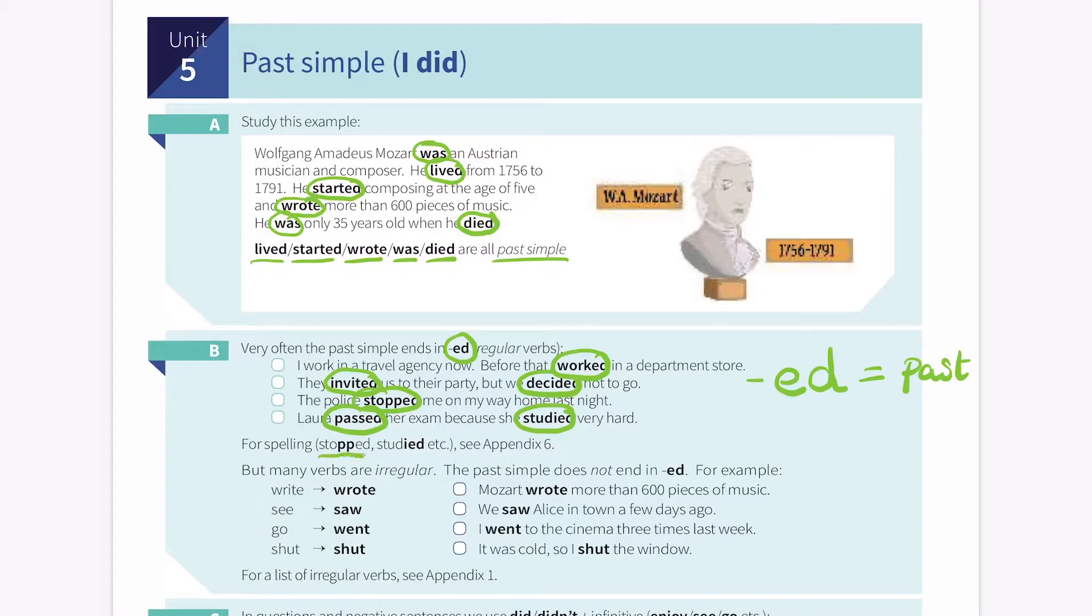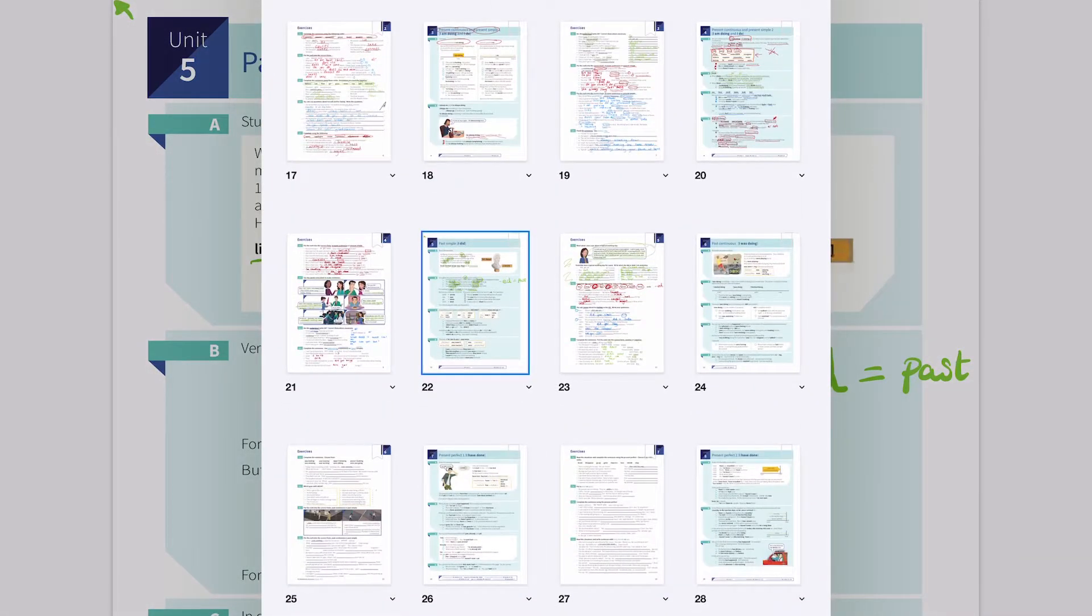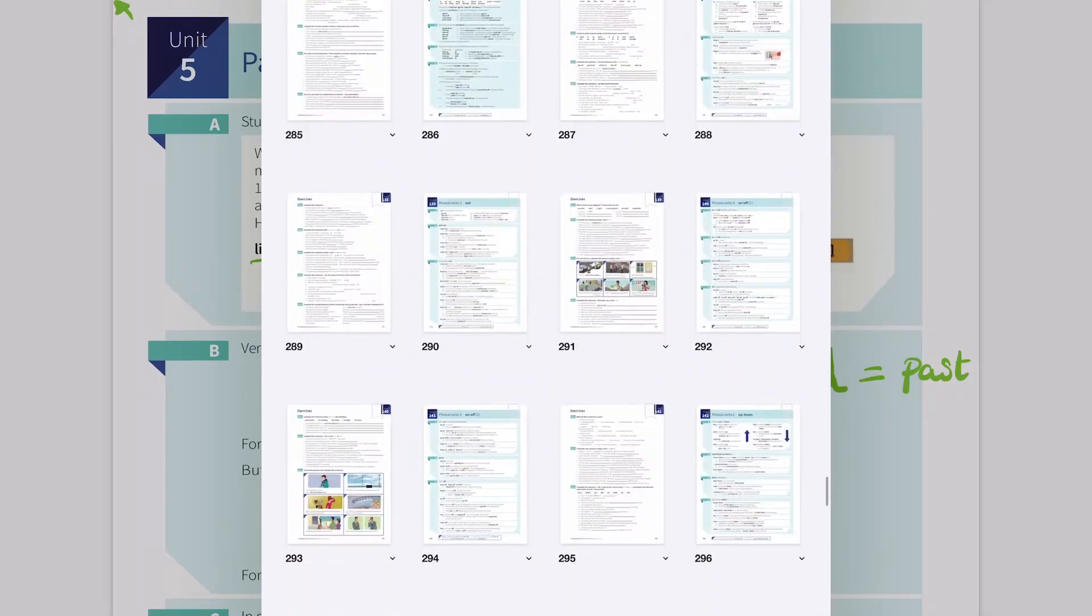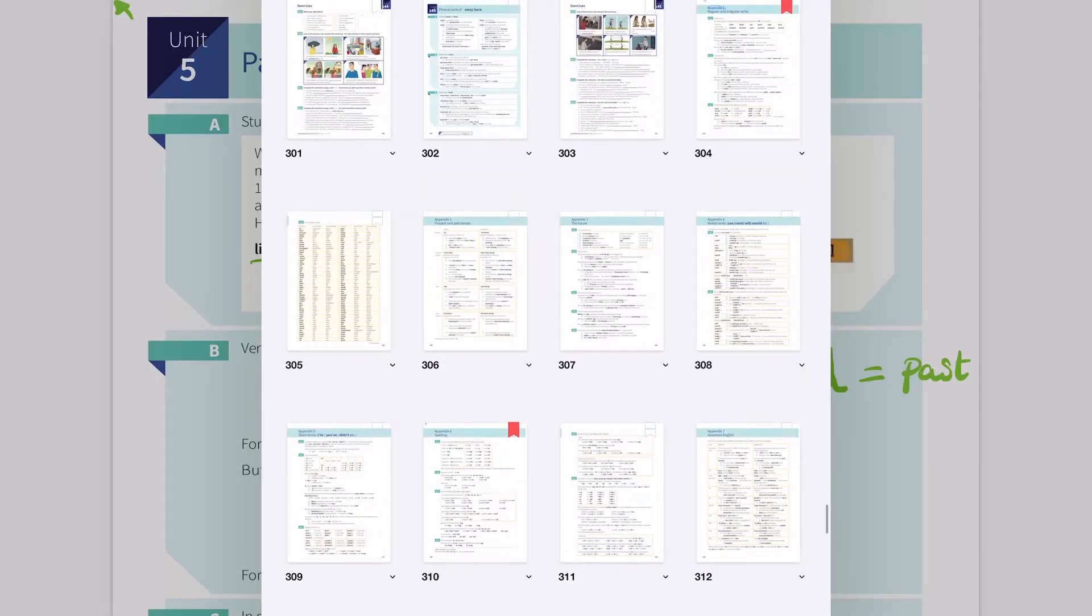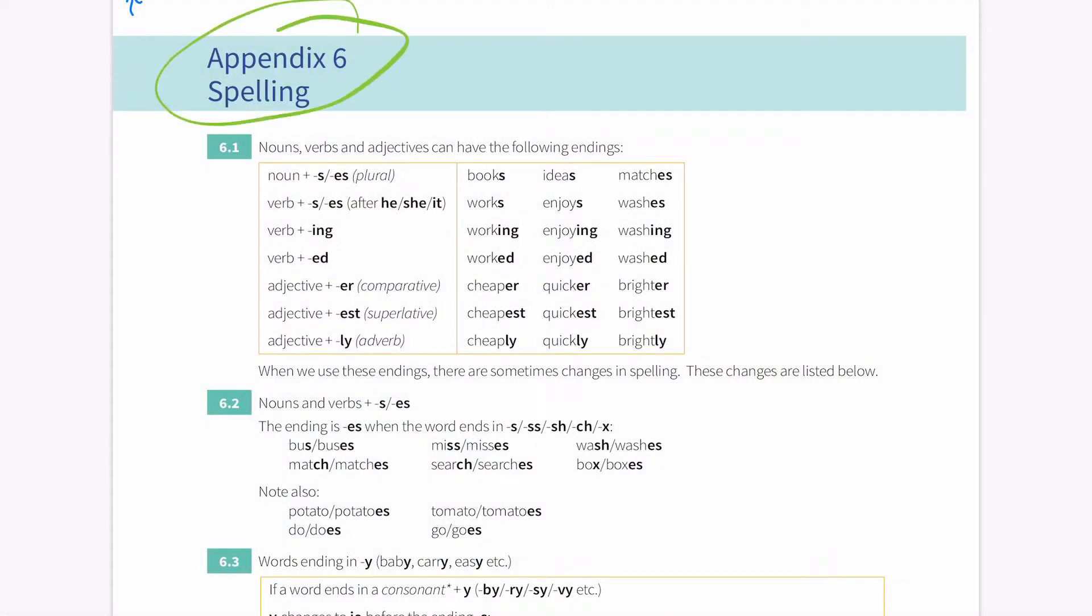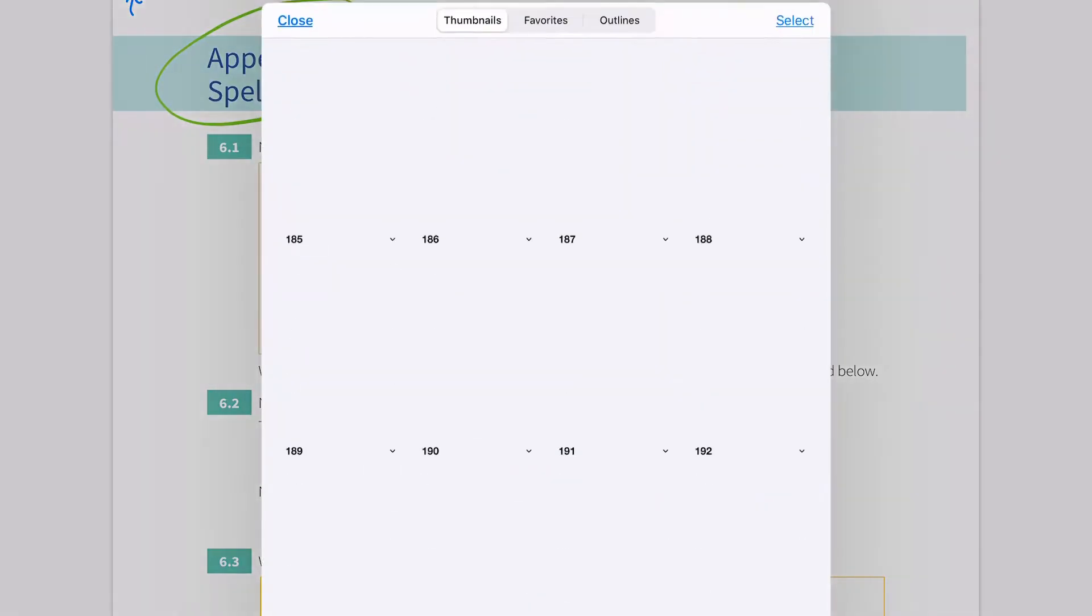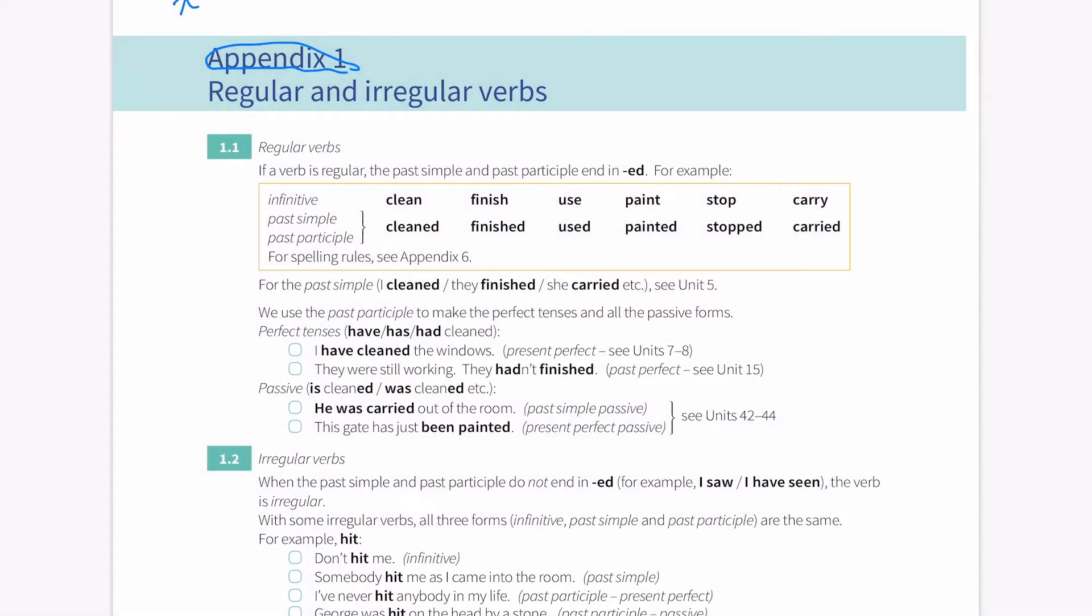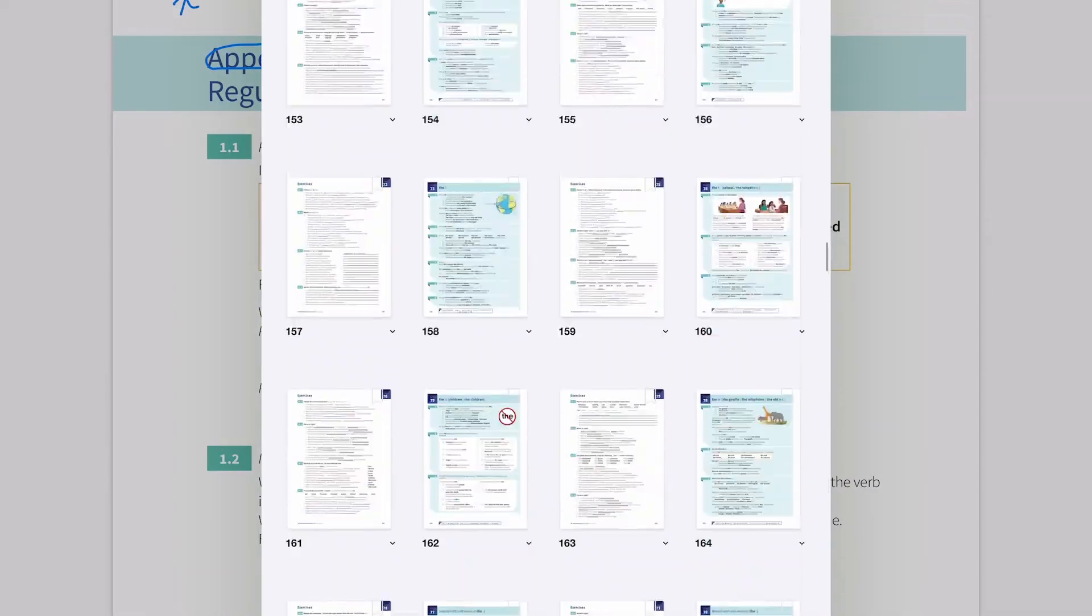So for some words like stopped, studied, you have to go to Appendix 6. So if you go up here and you click the four boxes, you can find all the pages in this entire book. So let's scroll down to Appendix 6. So that's Appendix 3, 4, 5, 6, this one. So when you find it here, click on the bookmark up here, the red square. Once it's red, it's in your favorites. And then you can click on the favorites tab to easily access them. So let's do Appendix 1 and Appendix 6. Save them both so you can access them very easily. Okay, let's go back to our original page.